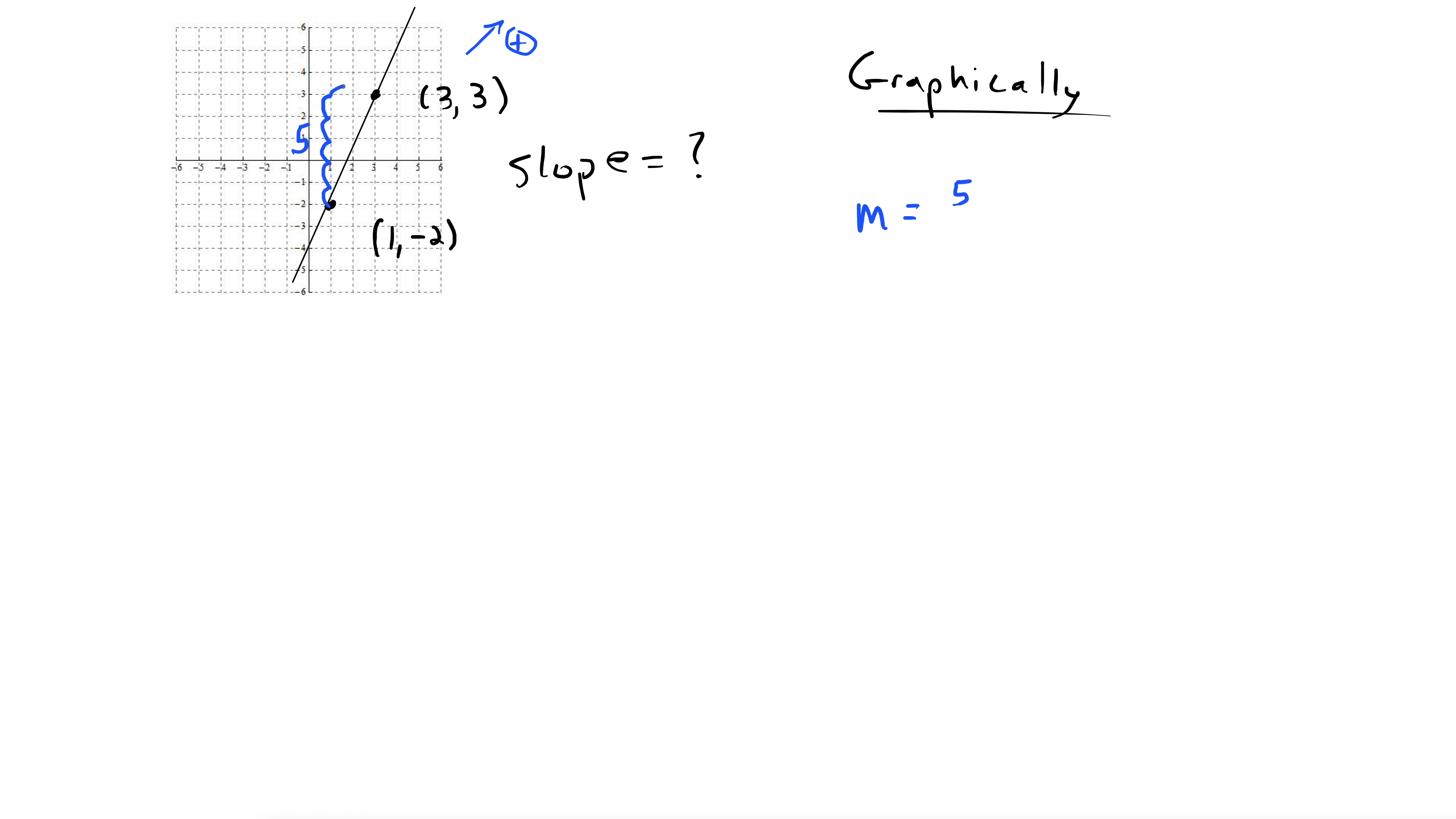And then we go 2 to the right. 1, 2. Over 2. And horizontally, the right is the positive direction. The left is the negative direction. And there we have it. There's the slope.